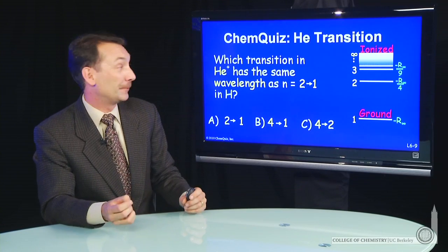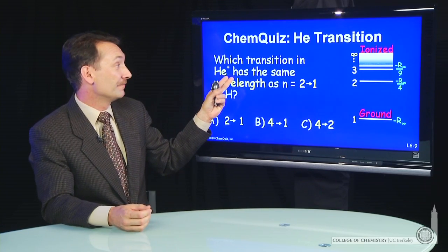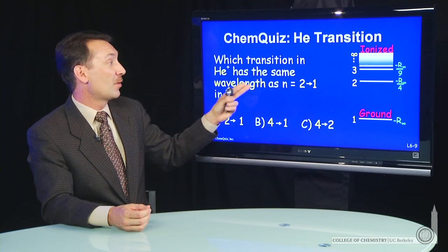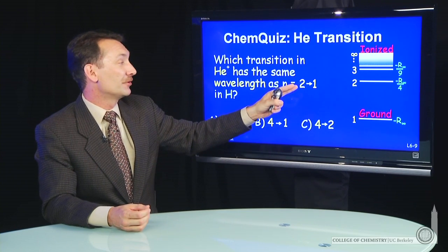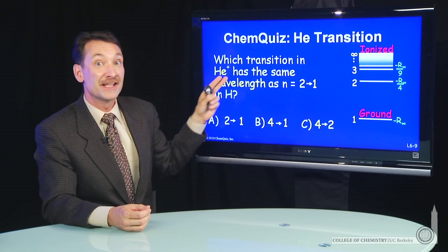Let's look at that helium ion in a little more detail. The helium plus ion, which transition has a wavelength that's equal to the 2 to 1 transition in the hydrogen atom?